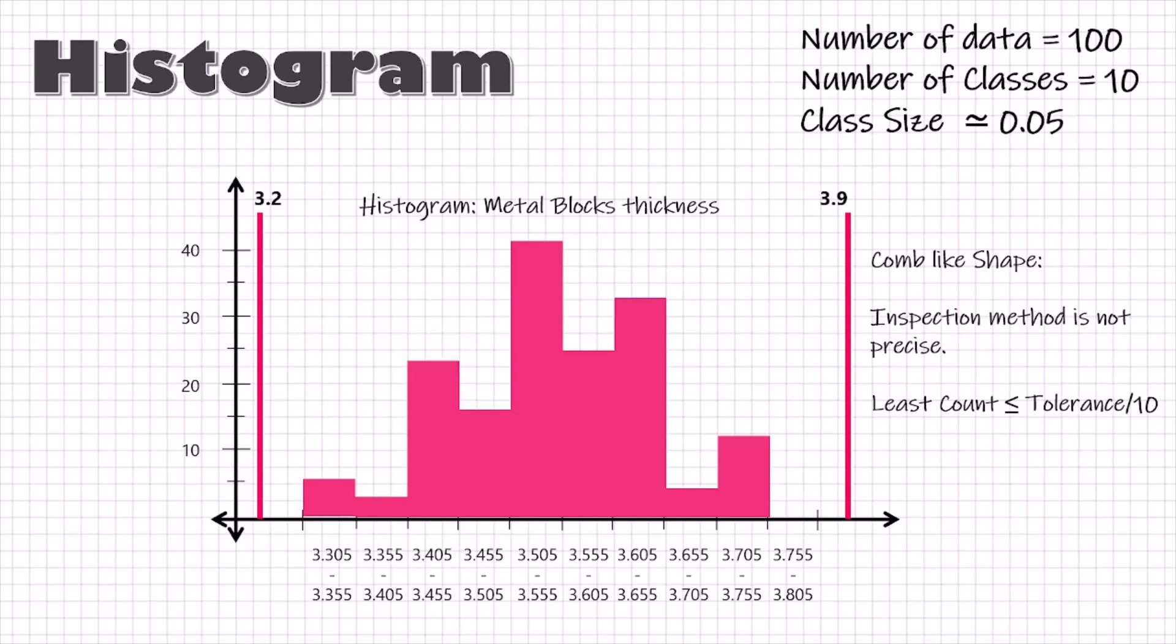So, if the dimension spec is 3.2 to 3.9, the tolerance range becomes 0.7 and the minimum least count required for the measuring equipment should be less than 0.07.